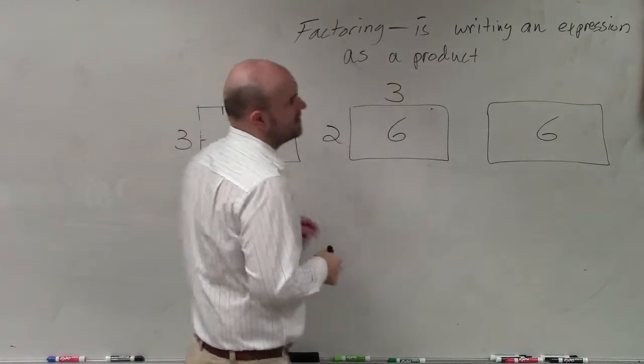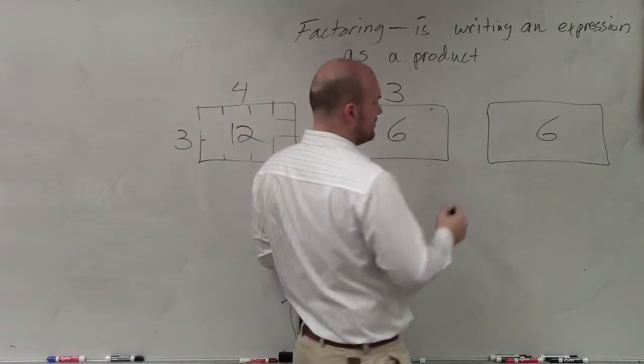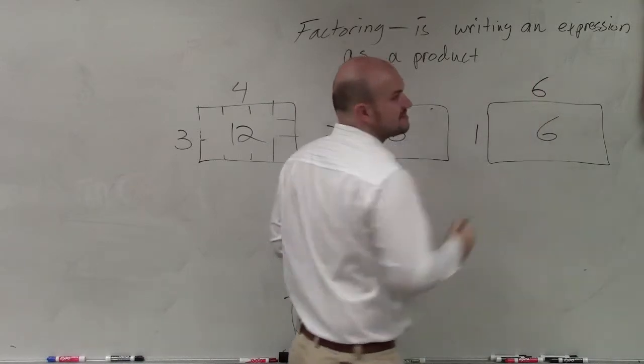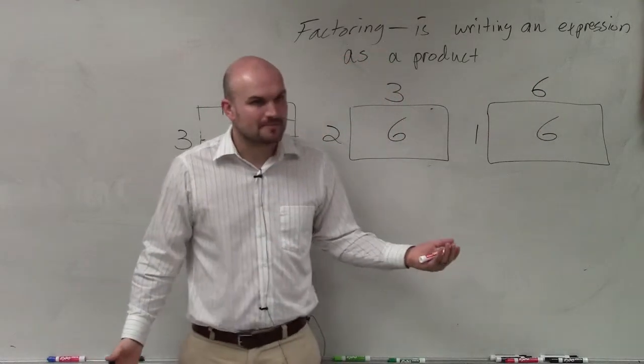2 and 3. And then the other one, Thomas, could be 1 and 6. Does that kind of make sense with you guys? OK.